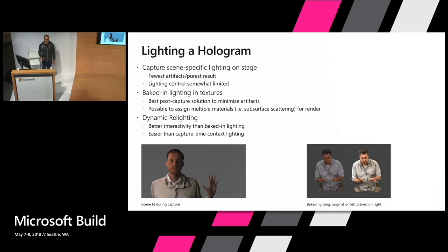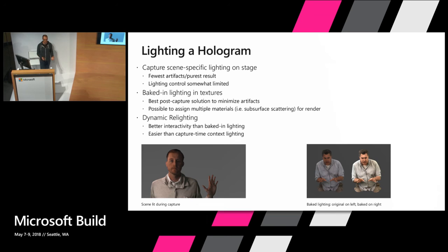What are your options when it comes to lighting your hologram? You have three options. First, we can capture with contextual lighting on the stage — for instance, if you know your subject will be placed in a VR environment where he is lit from the side, we can light him from the side when we capture. Another alternative is to use baked-in lighting in the textures — a lot of people have been preprocessing these texture sequences and baking the lighting in for pretty high quality results. A third alternative is dynamic lighting using the vertex normals that we embed in our meshes during the iterative processing pipeline, which gets you better interactivity.